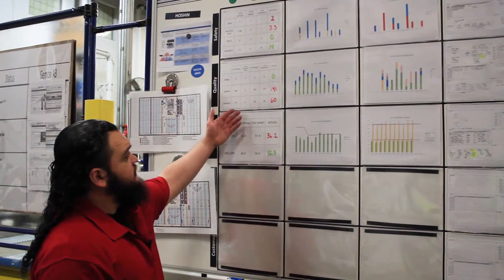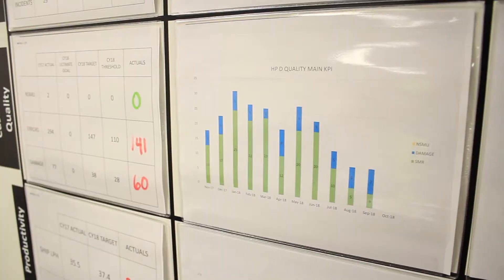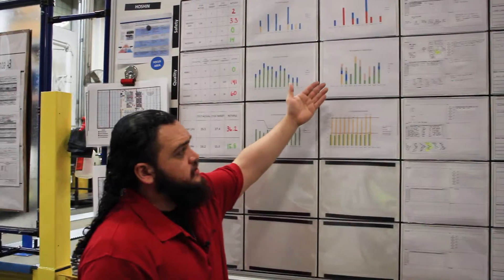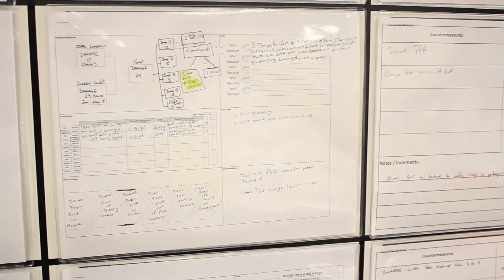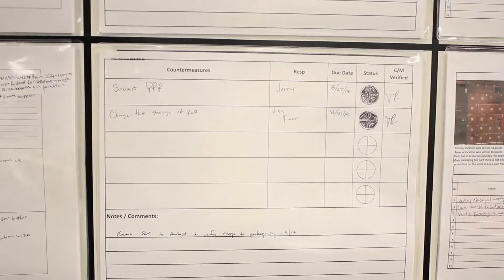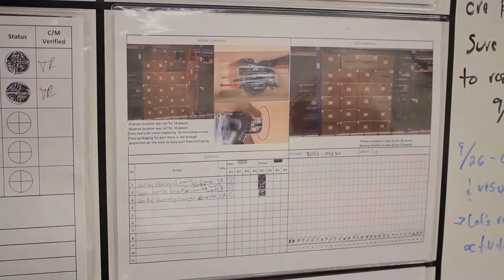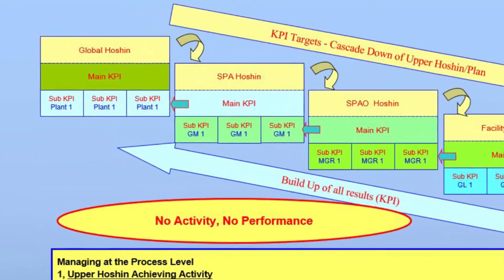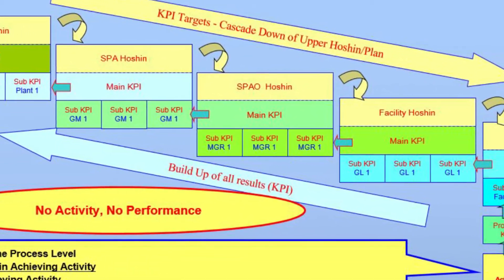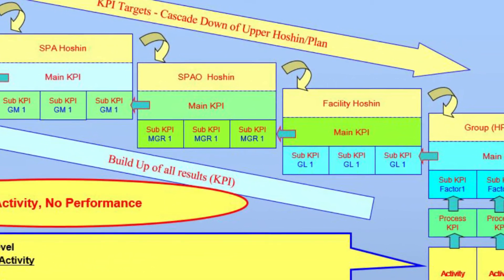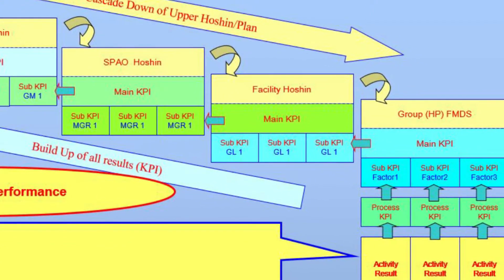What you have here is the notation for your home position, followed by your main KPI, your sub-KPI, your analysis, the activities, and finally your results. You have your global notation, your SPA notation, your SPAO notation, your facility notation, and finally your group, which is your home position FMDS.